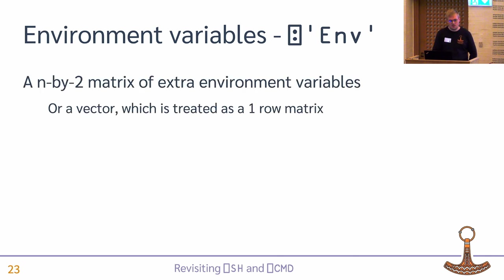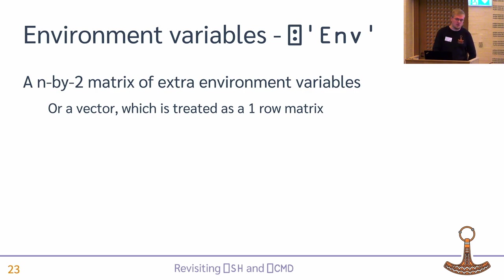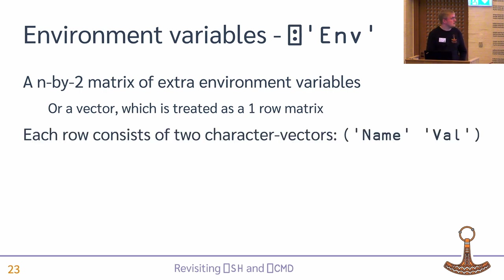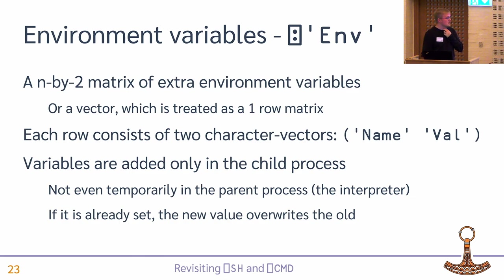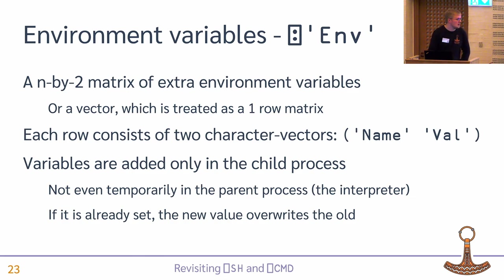Environment variables are specified as an N by 2 matrix of environment values to add — or a vector which is treated as just one — where each row is a name-value pair. They are added in the child process and don't pollute the interpreter's environment variables.